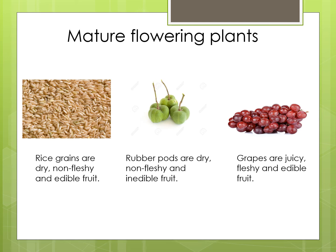Mature flowering plants. Here are three different examples of mature flowering plants. Kindly refer to page number 66 for more information. Observe some mature flowering plants on the slide. Can you spot any fruit growing on them? There are three examples given here on the slide.